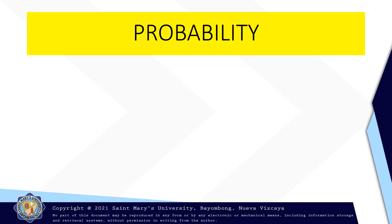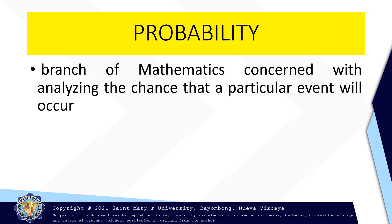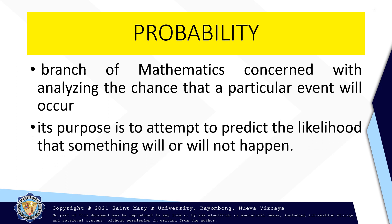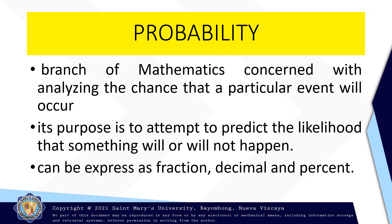Let's be familiarized on probability first before we deal on the basic terms that are connected to it. Probability is a branch of mathematics that is concerned with analyzing the chance that a particular event will occur. Its purpose is to attempt to predict the likelihood that something will or will not happen. It can be expressed as a fraction, as a decimal, and a percent.